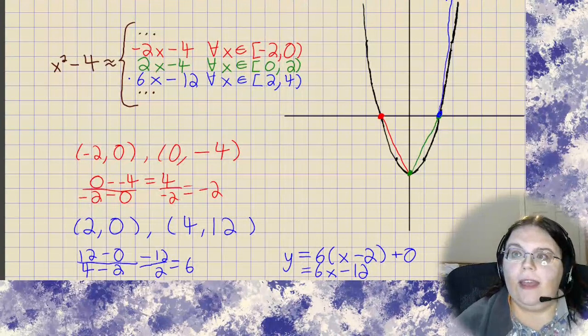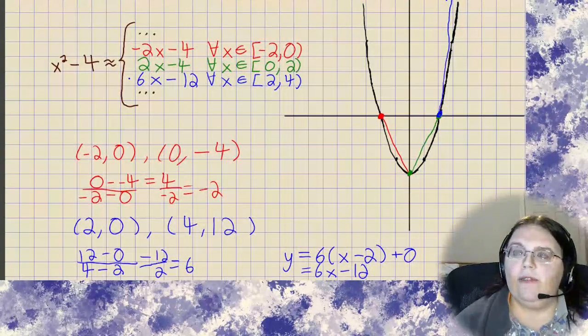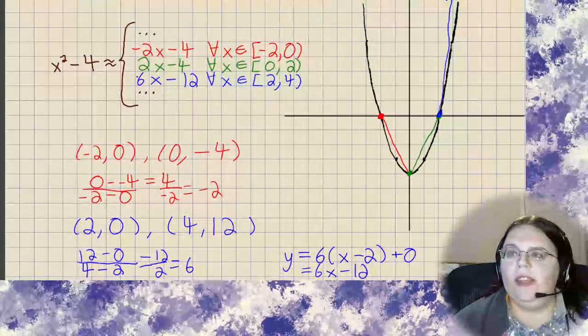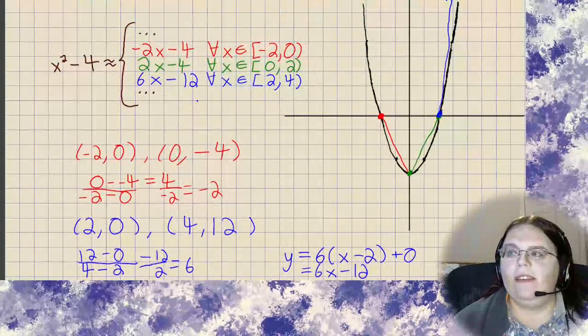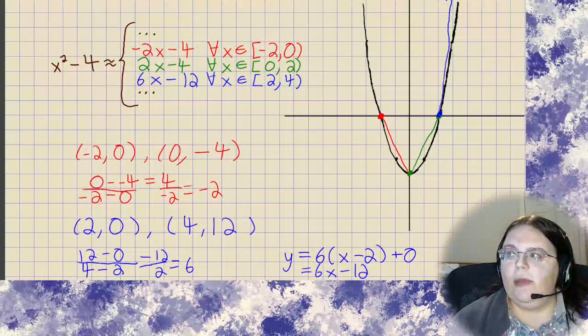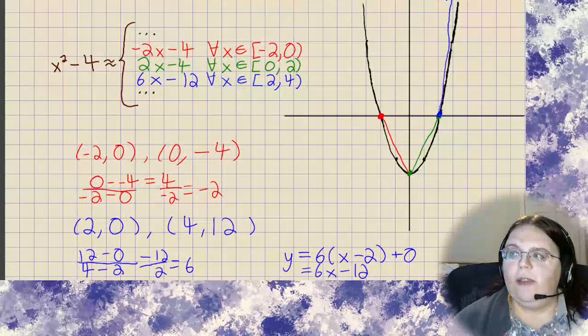Now, this would make calculating an approximate value for the function much easier because I could just multiply and subtract. It all would just work the usual way. So that's the idea of coming up with a piecewise approximation to a linear function.